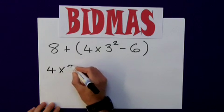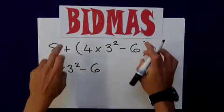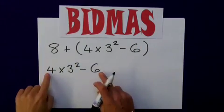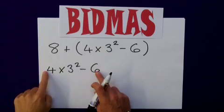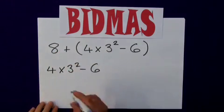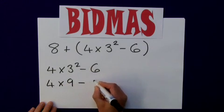4 times 3 squared, minus 6, and then we reapply BIDMAS to all of this part. Well, I don't have any brackets within this at the moment, but I do have an indice. 3 squared would be 9. So, that would be 4 multiplied by 9 minus 6.